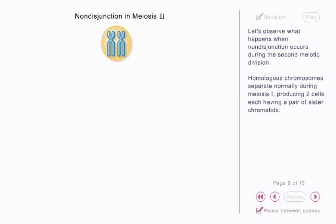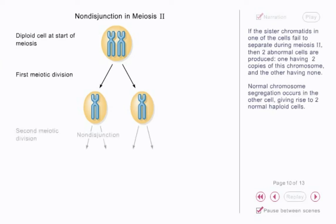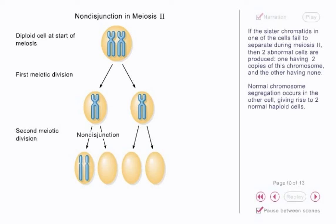Let's observe what happens when non-disjunction occurs during the second meiotic division. Homologous chromosomes separate normally during meiosis I, producing two cells each having a pair of sister chromatids. If the sister chromatids in one of the cells fail to separate during meiosis II, then two abnormal cells are produced — one having two copies of this chromosome and the other having none. Normal chromosome segregation occurs in the other cell, giving rise to two normal haploid cells.